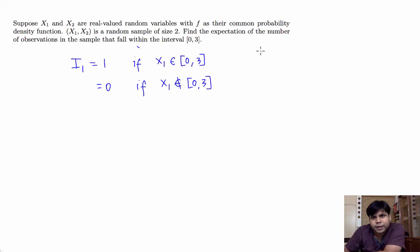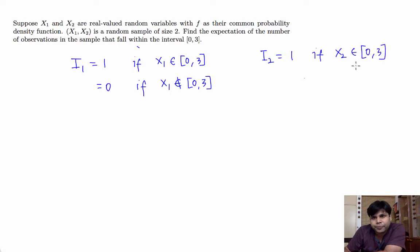And i2 is defined in exactly the same way — it takes value 1 if x2 belongs to the interval 0 to 3, and 0 if that is not the case.